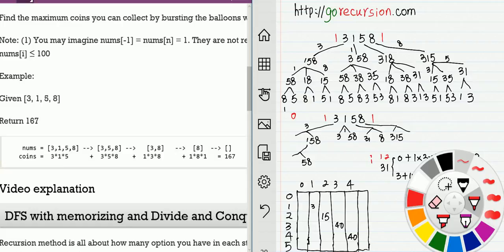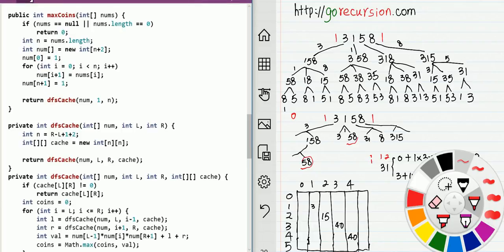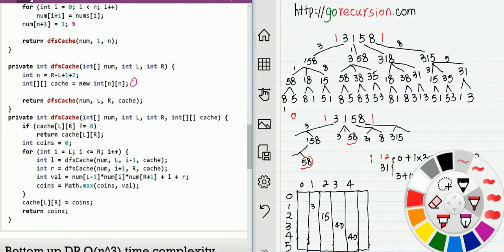Here is our solution. We push 1 in the beginning and 1 at the end. Then we have an array to memoize. We have an option. Each step we burst left or right. After those two subproblems are solved, the value we can get is this plus left plus right.